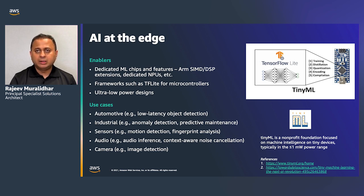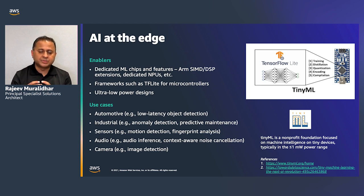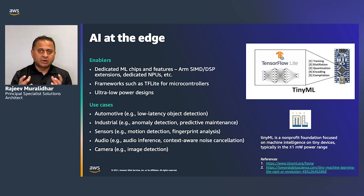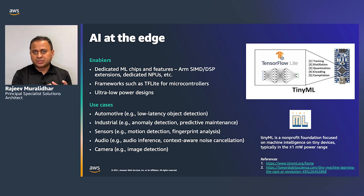There are primarily three enablers. First, from a hardware perspective, dedicated ML chips and features such as ARM SIMD instructions — single-instruction multiple data — which is the core of machine learning algorithms. These are now provided as ISA extensions in several silicon vendors today. Additionally, you have dedicated coprocessors or ML chips available on the same hardware, so you can do general-purpose compute on ARM-based chips and offload machine learning onto dedicated chips as well.